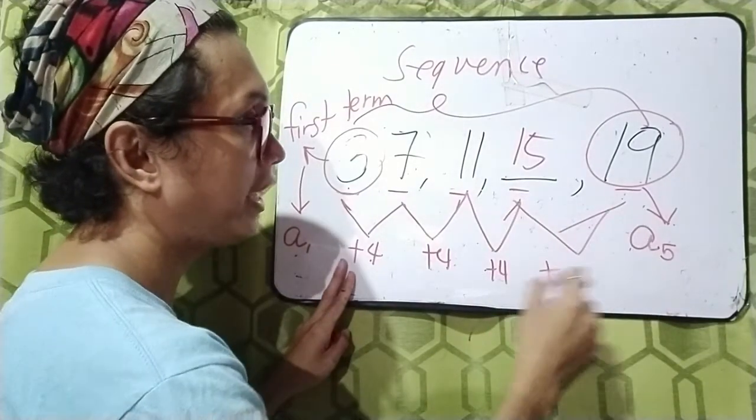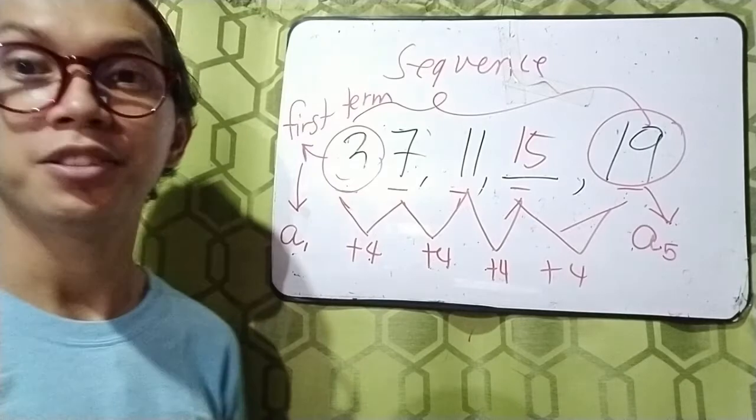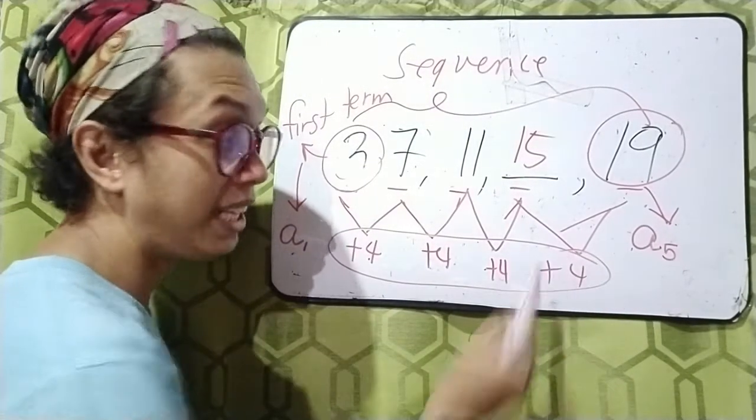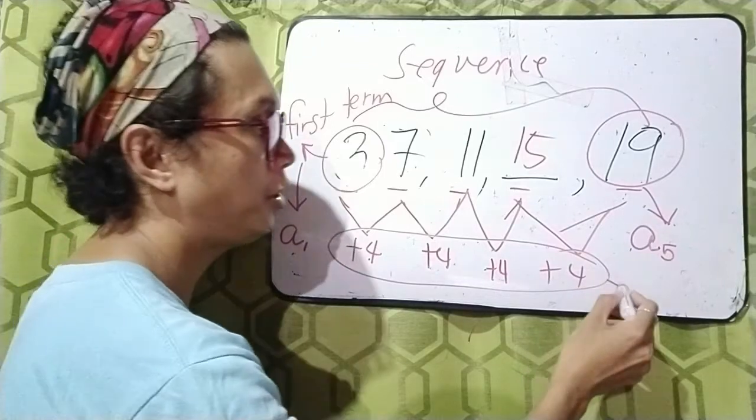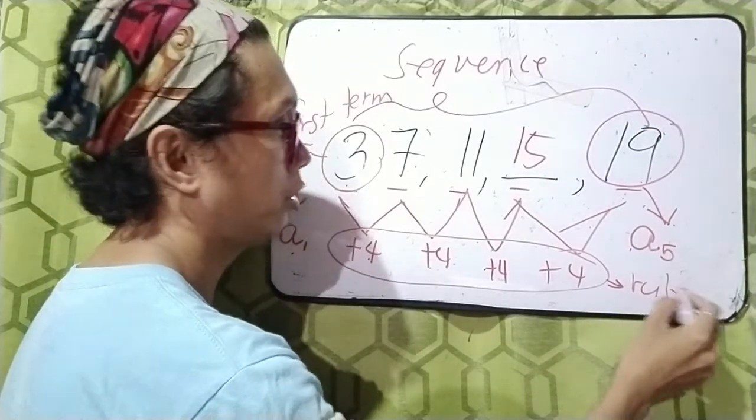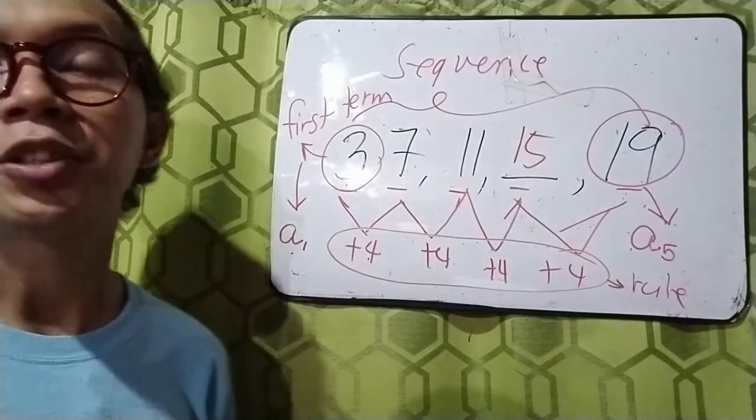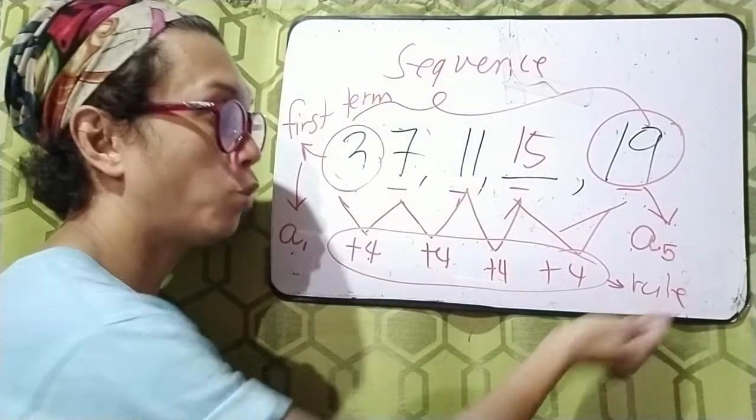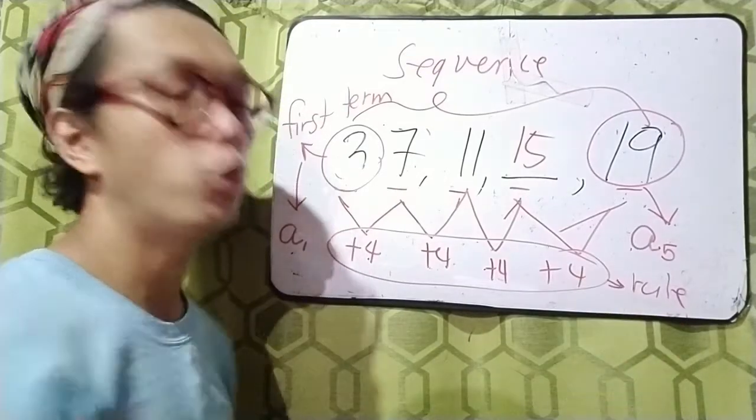15 plus 4 is 19. So, the pattern is actually by adding 4. And we call it the rule. How we get the term of a sequence is what we call the rule.